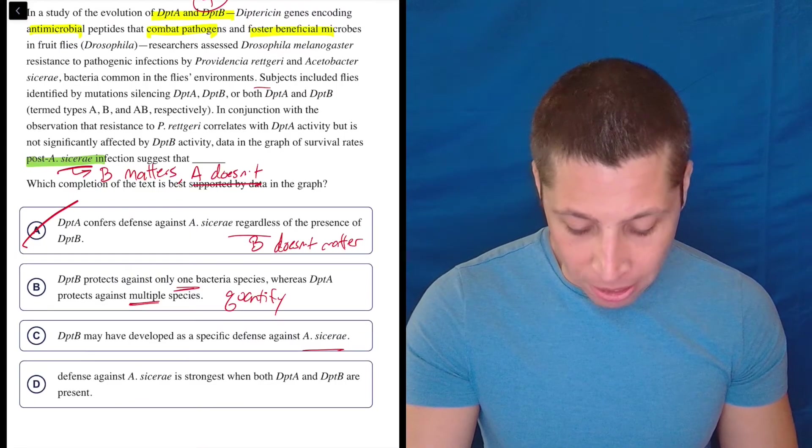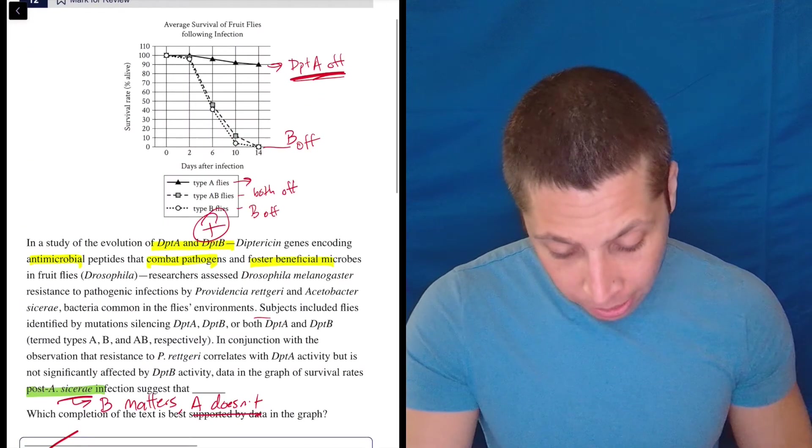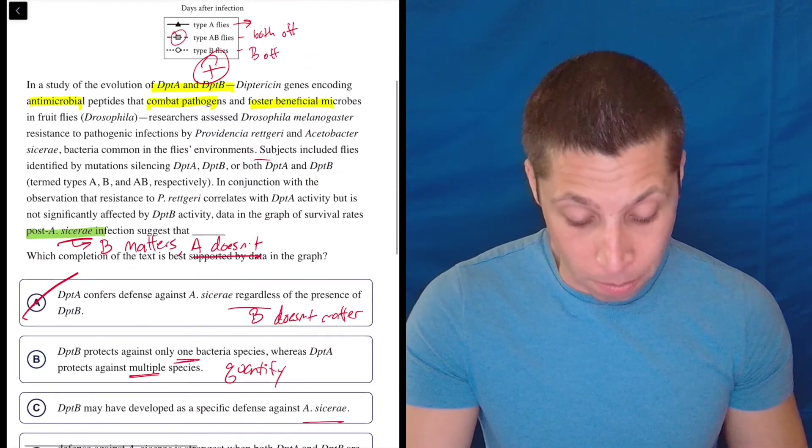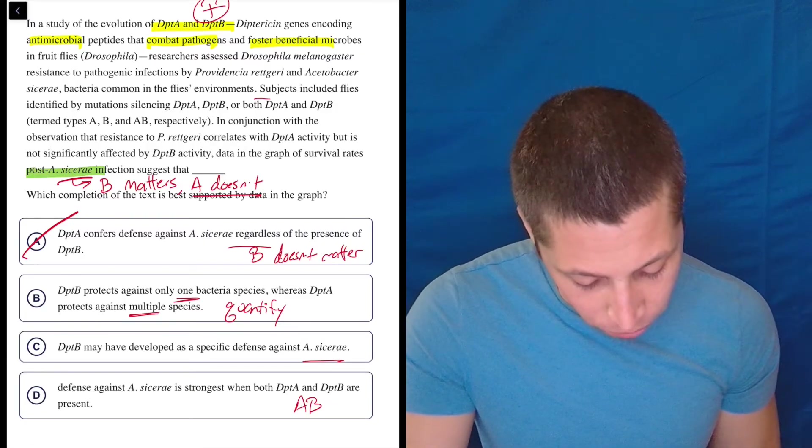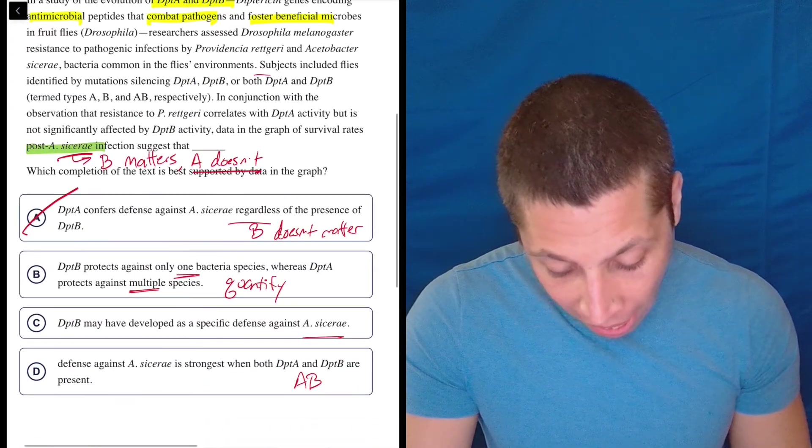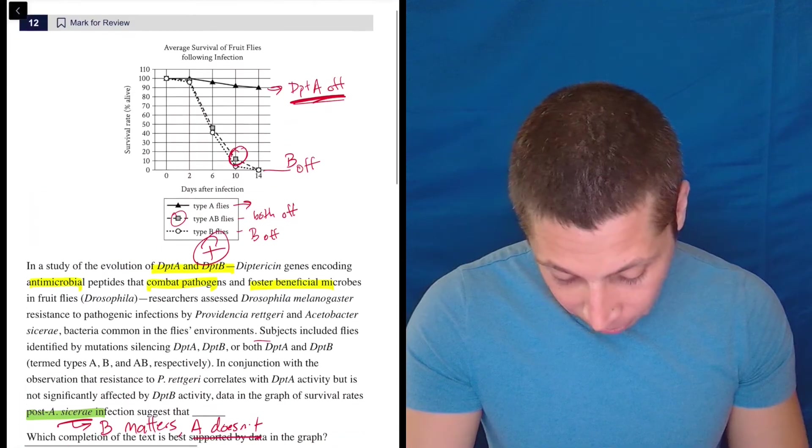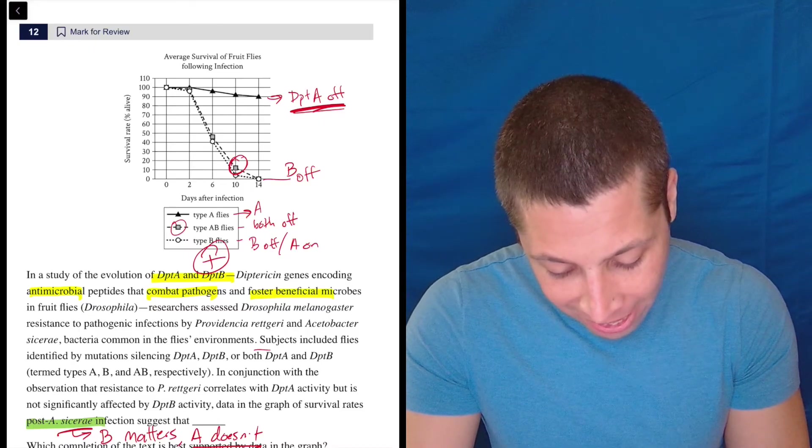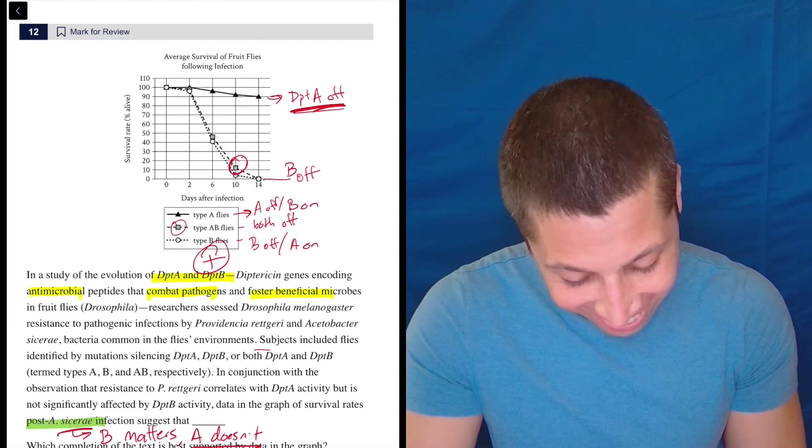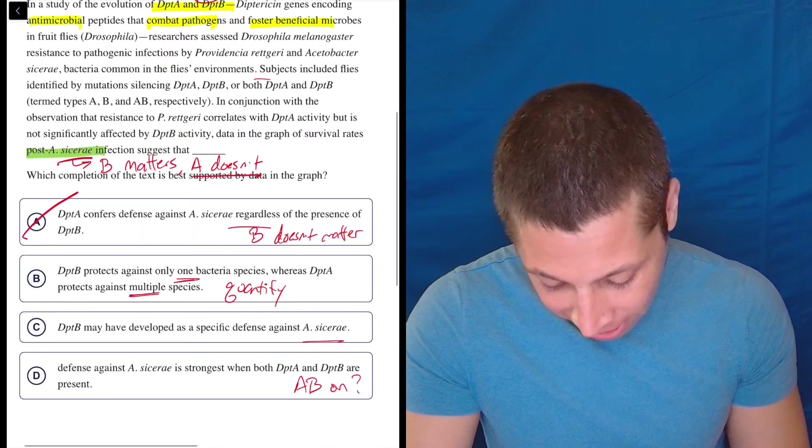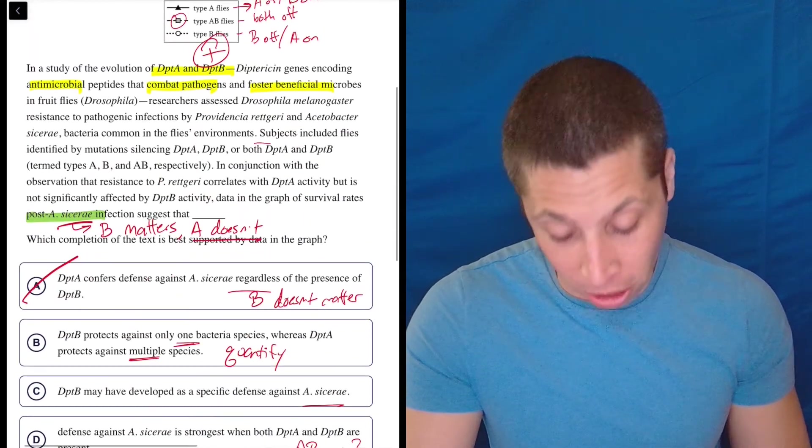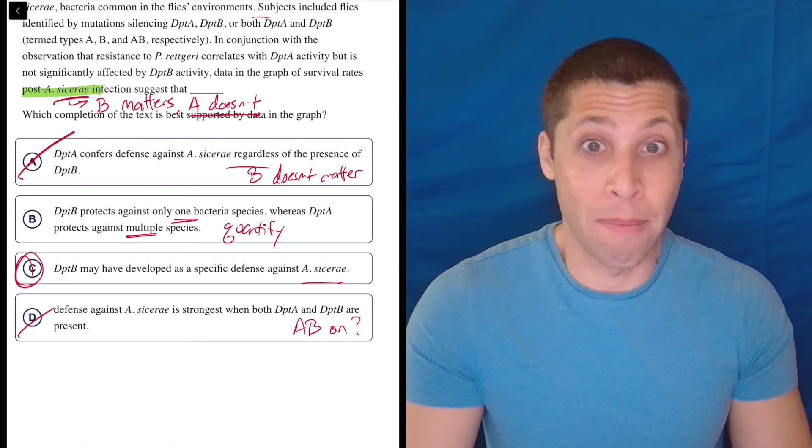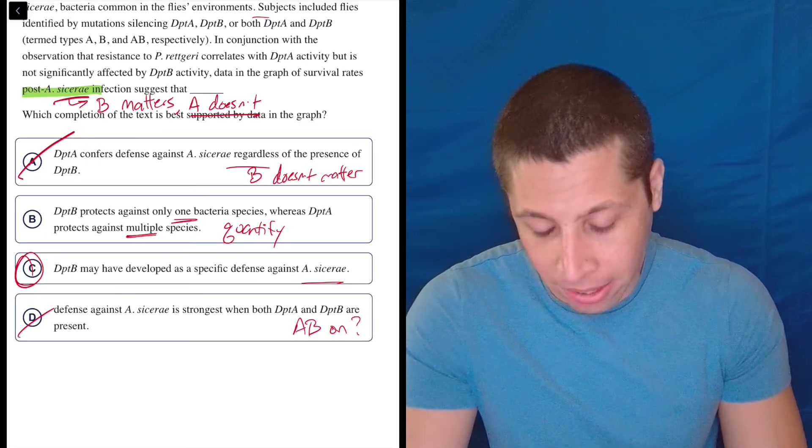So let's look at D. Defense against A. sicerae is strongest when both DptA and DptB are present? No, because that's the AB flies. And look, they're all here, right? That's the square. They're all dead. So no, it's not strongest when, when both are there. Um, or actually wait, see, I'm messing up. See, this is why this is so confusing. This is AB off. We don't have an AB on, right? So this would be B off, A on. The top one is A off, B on, and AB flies are both off. So do I even know here when both are present? I don't know what's going on. It's not even on the chart. I think, see, I'm losing it. And I think for me, so the answer is C at this point, if I had made it this far, if I had the time to answer this question, I'd pick C and I'd be right. But oh my God, it takes a lot to get this far.